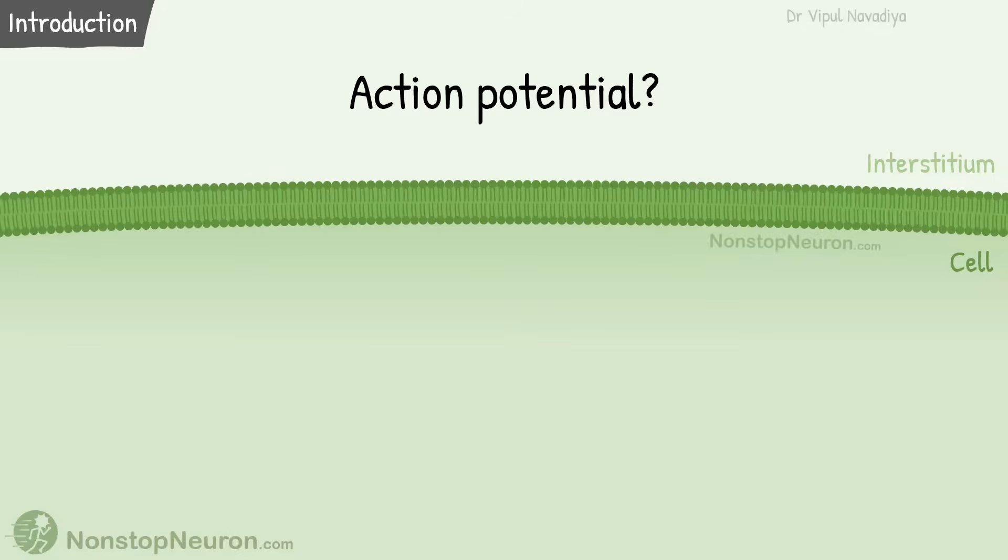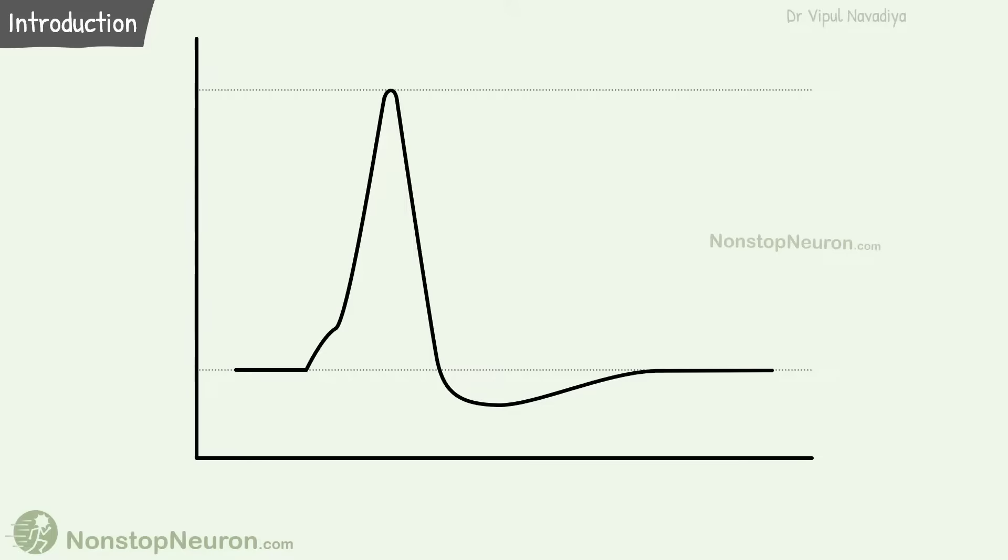First of all, what is an action potential? It is a rapid change in membrane potential that travels rapidly along the membrane. This is a shape of action potential. Here we have time on x-axis and voltage on y-axis.